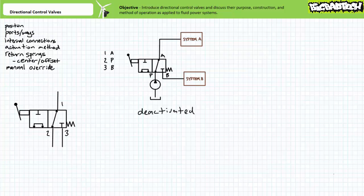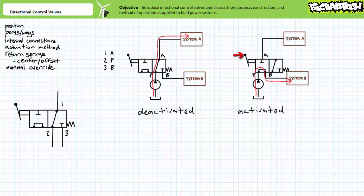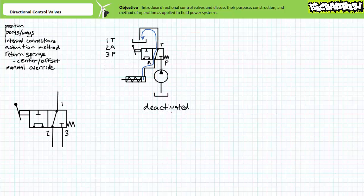Consider a configuration of this valve making use of port two as the pressure port, port one as the input to system A, and port three as the input to system B. We have in effect created a selector valve — in the deactivated state, pressurized flow is routed to system A; in the activated state, pressurized flow is routed to system B. Two-position, three-way directional control valves are commonly used to control the actuation direction of single-acting cylinders.